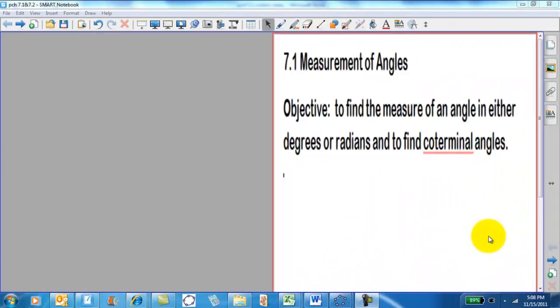Hello, Pre-Calc Honor students. Here we're starting Chapter 7, a review of what you did in trigonometry in Algebra 2 Honors, but also some added stuff in 7.2. First, 7.1, measurement of angles, just looking again at how to measure angles in either degrees or radians, and to find what's meant by coterminal angles.